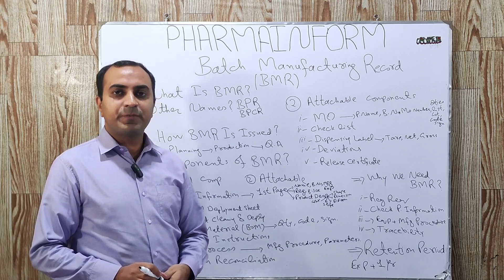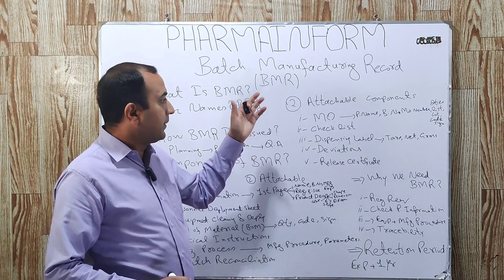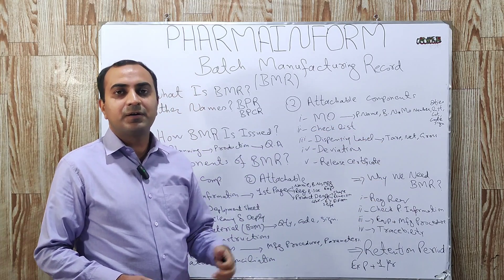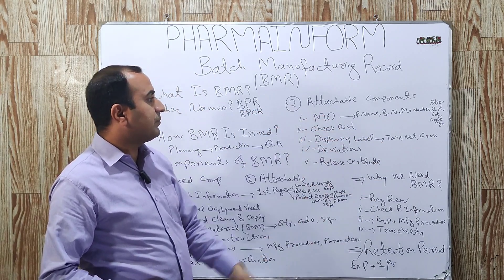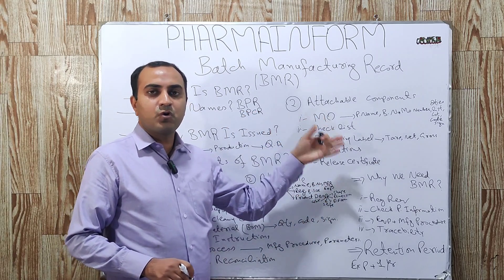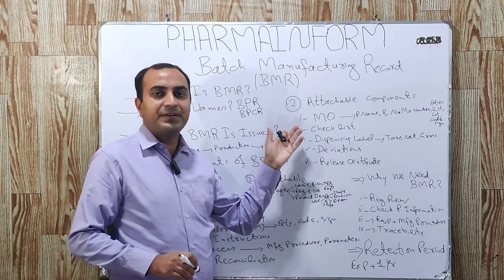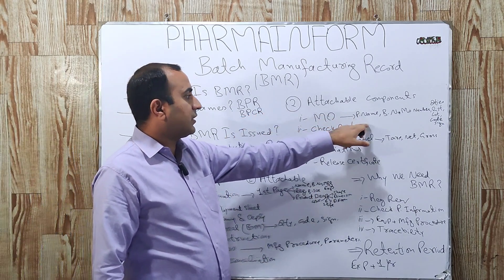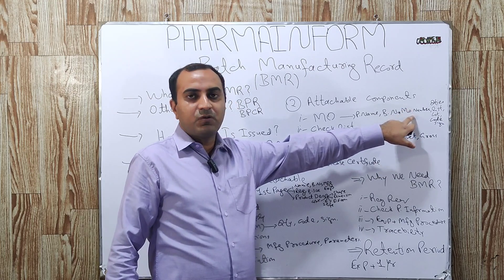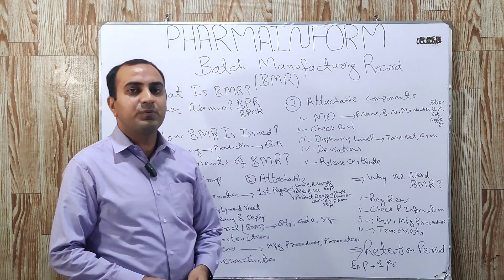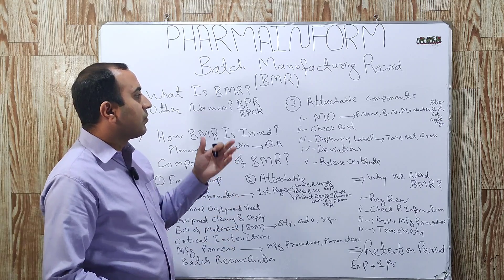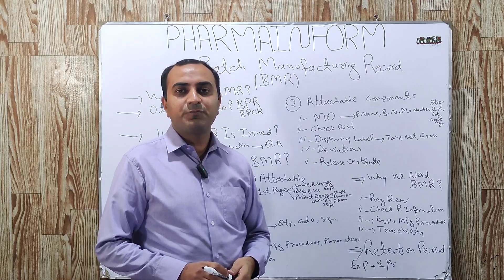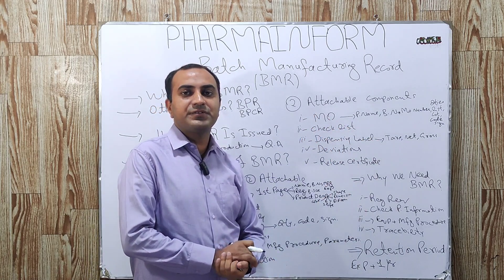Now, what are the attachable components? These are the components which are not part of the master BMR — we receive them from other departments and attach them to the BMR. The first is the MO, manufacturing order or dispensing order. These are documents which include the list of materials, quantities of the materials, code of the material, and all batch materials in the store are dispensed according to the manufacturing order. It also includes product name, batch number, manufacturing order number, quantities, list of material, lot number, and code number.